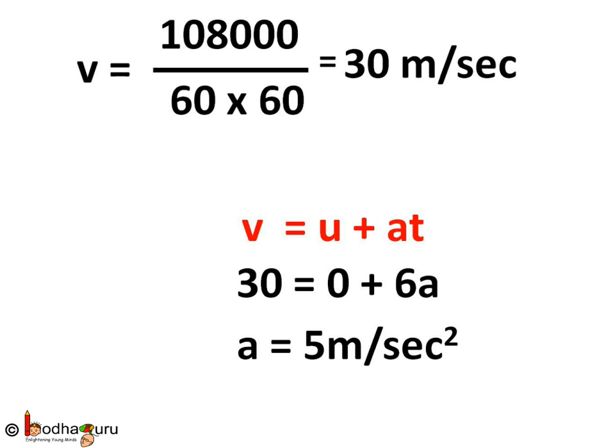We have final velocity v is equal to 108 km per hour. We will calculate it in m per second because acceleration is also given in m per second square, so everything should be in same unit. 1 km is equal to 1000 m and 1 hour is equal to 3600 seconds. So v is equal to 108 into 1000 divided by 3600 which comes out to be 30 meter per second.